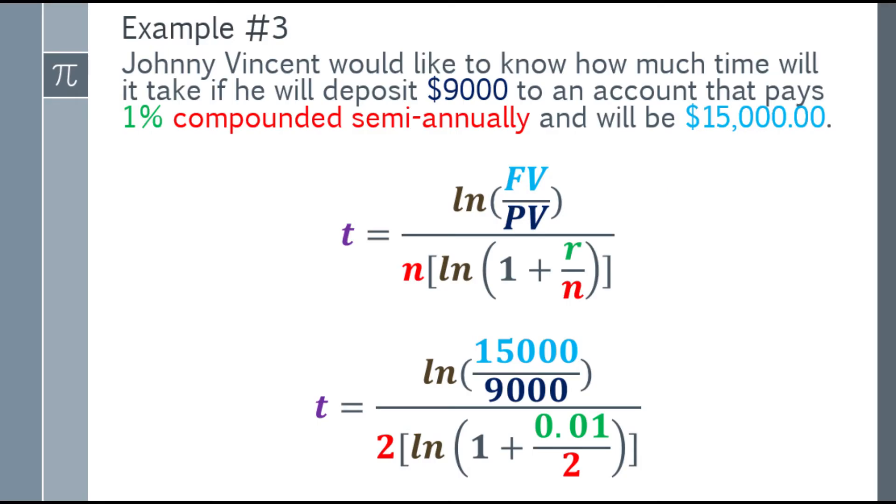Time equals the Ln of the future value over the present value. The future value is $15,000 and the present value is $9,000. Ln of 15,000 over 9,000. Let's go to the denominator part. It's compounded semi-annually, so N is 2. 2 times Ln times the quantity 1 plus the fraction. The fraction is R over N. 1% is 0.01, and compounded semi-annually will be 2.